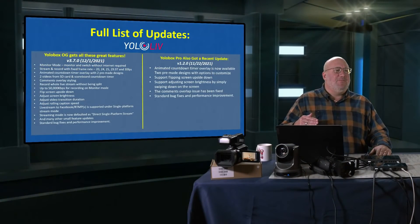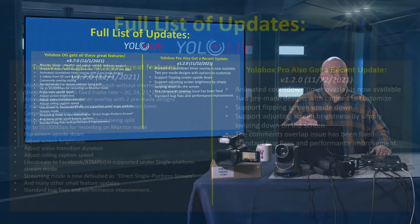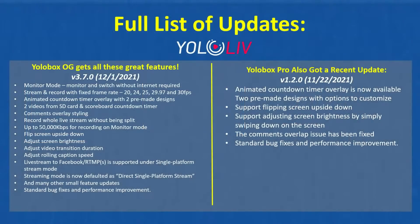Before we do that, let's bring this up full screen. These are the latest firmware versions: the YoloBox OG is on version 3.7.1, and the YoloBox Pro is on version 1.2.0.